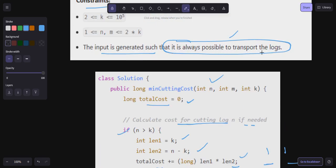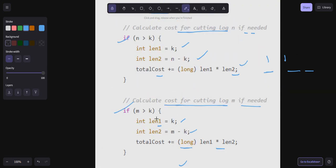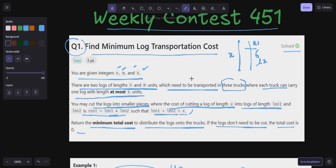The input is generated such that it is always possible to transport logs. This is the solution. In the end we just return total cost. Here we have to use long. This is int, int, so we have to change it to long. I hope you guys are clear.